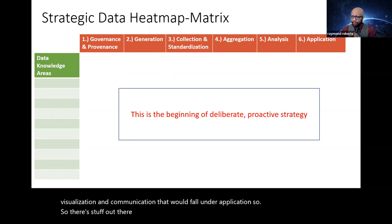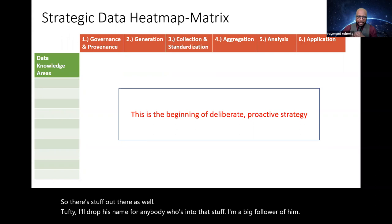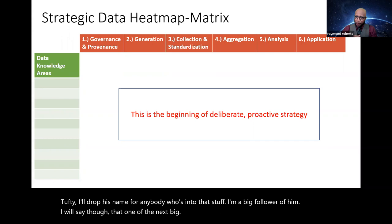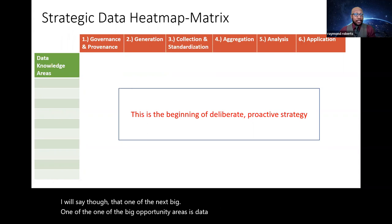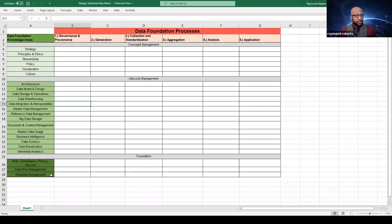And I should say they don't use the term, but under six, you have a lot of research and data visualization communication. That would fall under application. So there's stuff out there as well. Tufte, I'll drop his name for anybody who's into that stuff. I'm a big follower of him. I will say though that one of the next big, one of the big opportunity areas is data integrity or data quality, as you'll see it named here on that heat map. So you'll see at the bottom data risk management, metadata management at the bottom. And then in the middle life cycle management, data integration and interoperability, master data usage, that all combines data integrity. Think of the idea of the definition of data quality, which we do have a level 100 and level 200 education on that. Thank you.